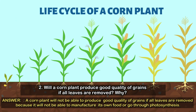A corn plant will not be able to produce good quality of grains if all leaves are removed because it will not be able to manufacture its own food or go through photosynthesis.